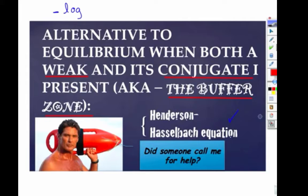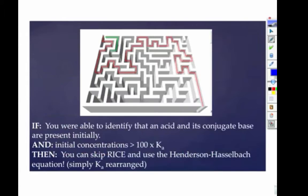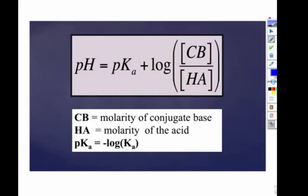Now there's a form for a weak base and there's a form for a weak acid. If we took minus the log of both sides, we would end up with the acid form of this.